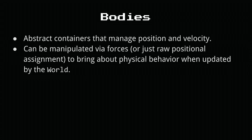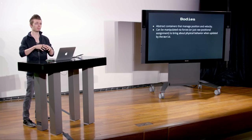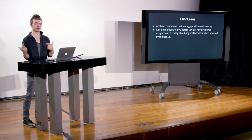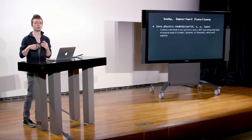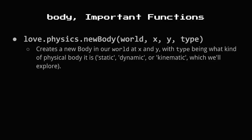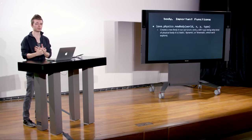Beyond the world object, which sets up our stage, we need bodies to actually interact with each other. A body is an abstract container — it holds a position and a velocity. You attach fixtures to it that give it a shape and therefore a collision box. To create a new body, we use love.physics.newBody, passing in the world so the world has a reference to it. Every time we call update on our world, it performs collision checks on that body and updates its position and velocity.